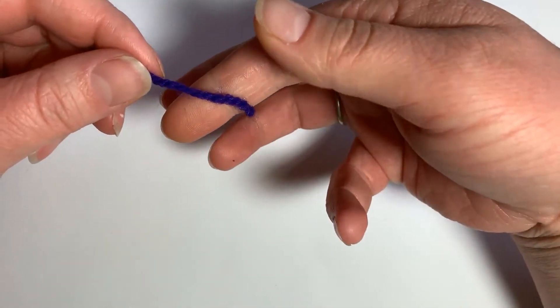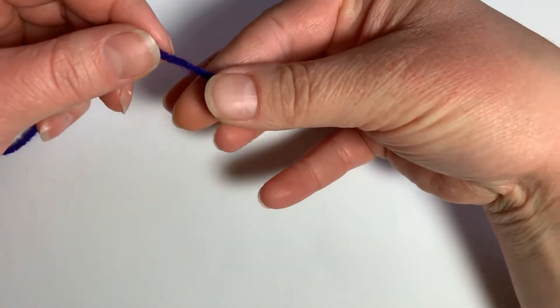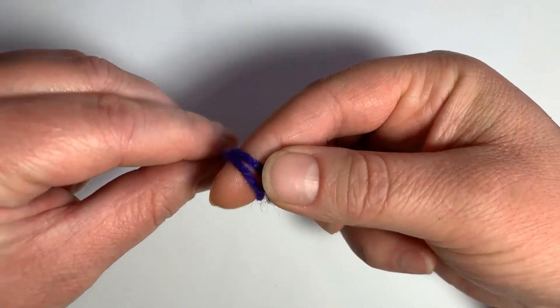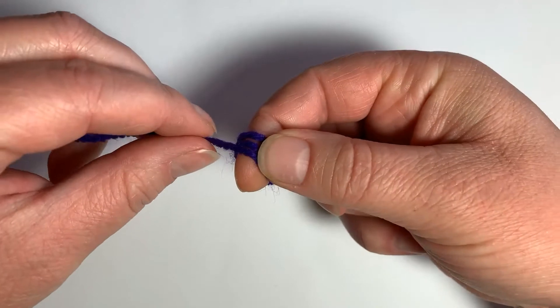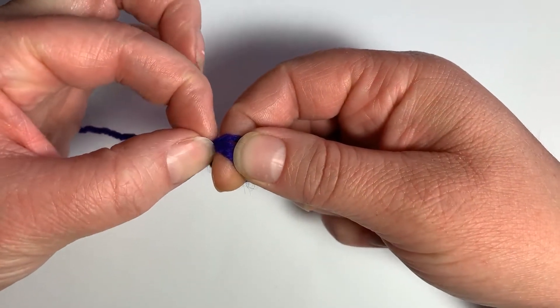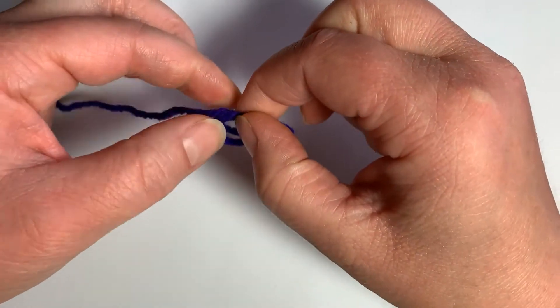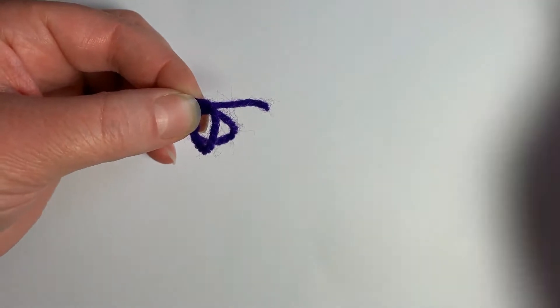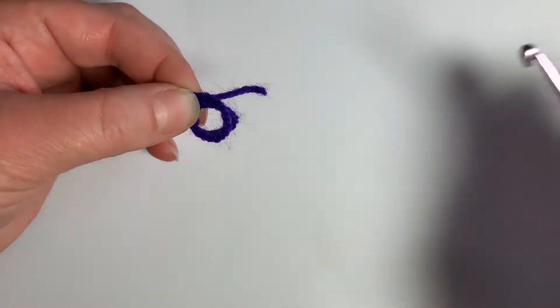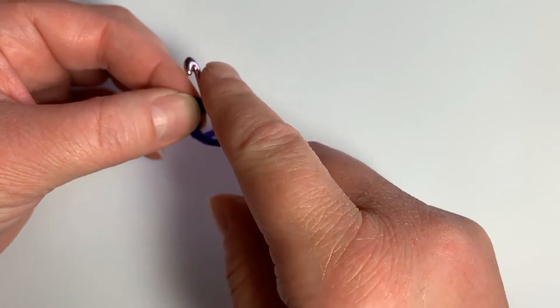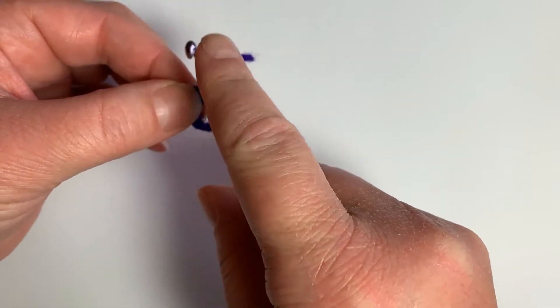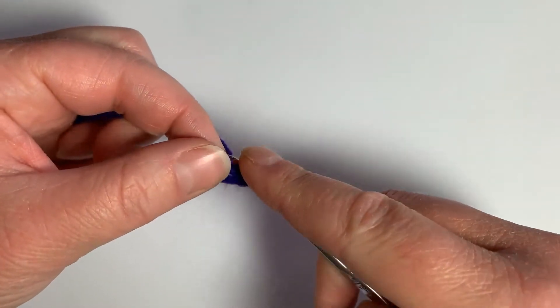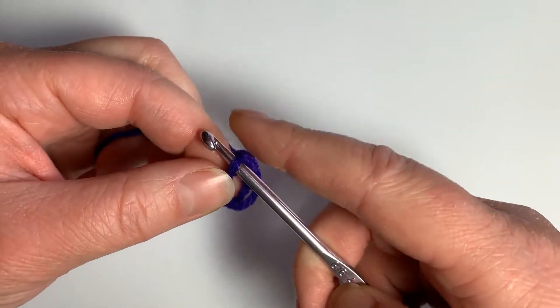To begin, you hold the yarn between your thumb and your forefinger, the little tail, and you wrap it around your finger once and twice. Now you'll pinch and grab where they intersect. So now you have your magic circle here with two loops. And we are going to insert our hook, hold the loop with your forefinger, yarn over and pull up a loop.